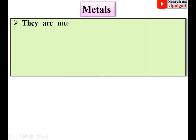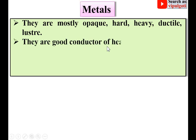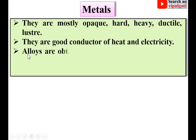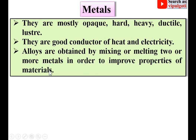Metals are mostly opaque, hard, heavy, ductile, and have luster. They are good conductors of heat and electricity. Alloys are obtained by mixing or melting two or more metals in order to improve the properties of materials.